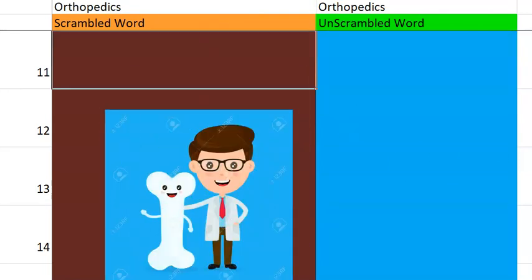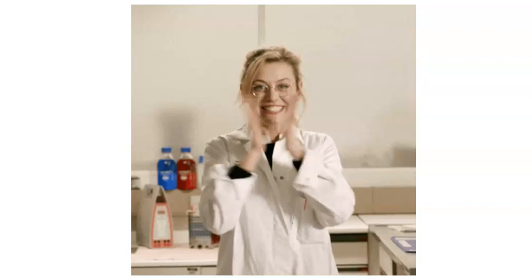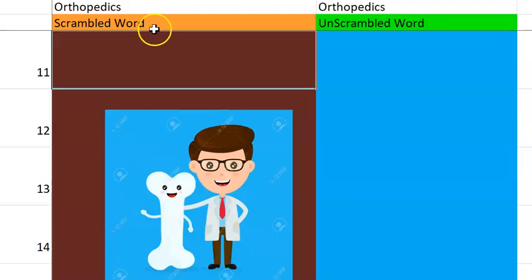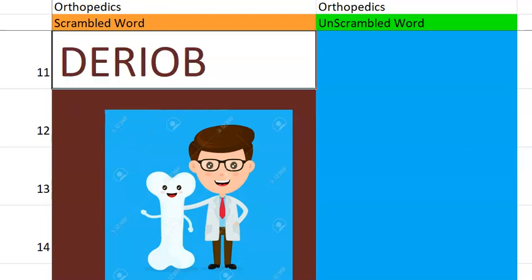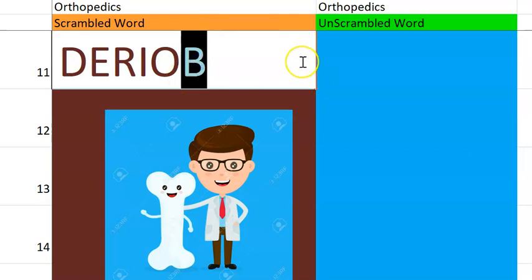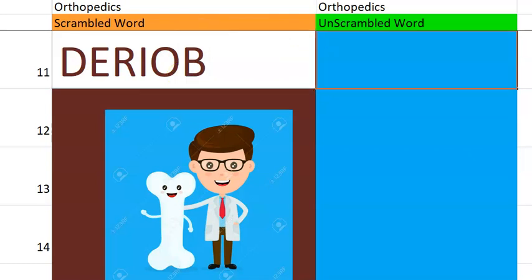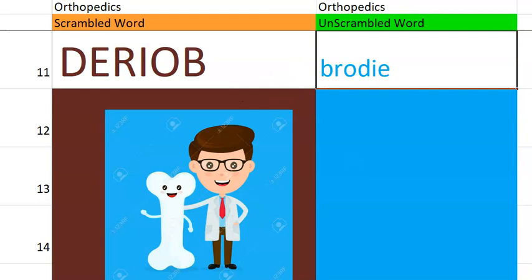Let's go to the eleventh one. Superb guys, you have solved ten and learned ten terminologies from orthopedics. Let's continue with the eleventh one. What do you think this one is? It starts with a B, some abscess, a Brodied kind of thing. Brody abscess. Very good.